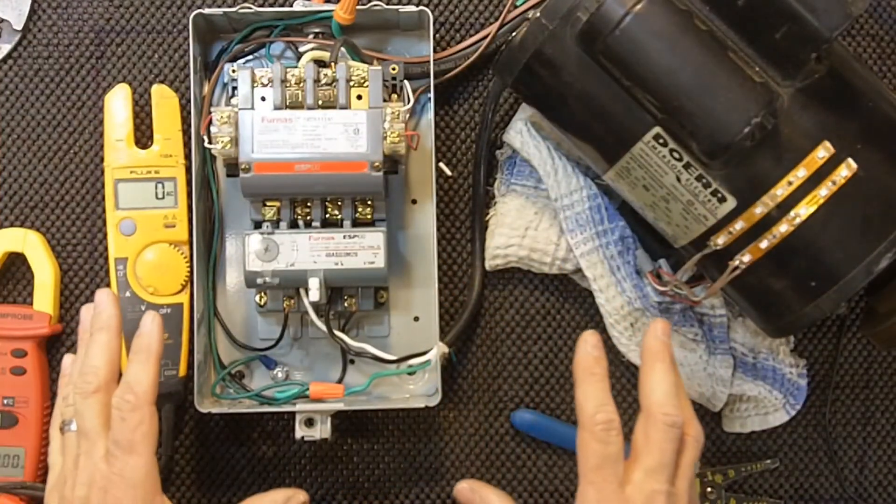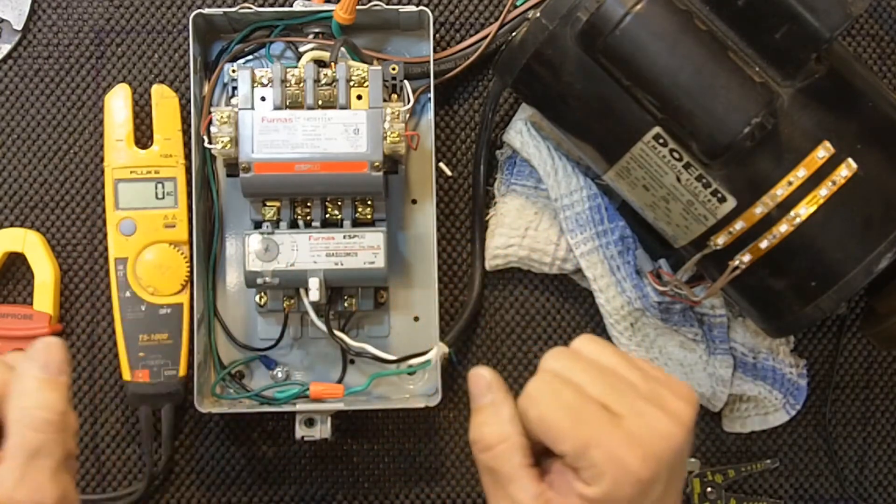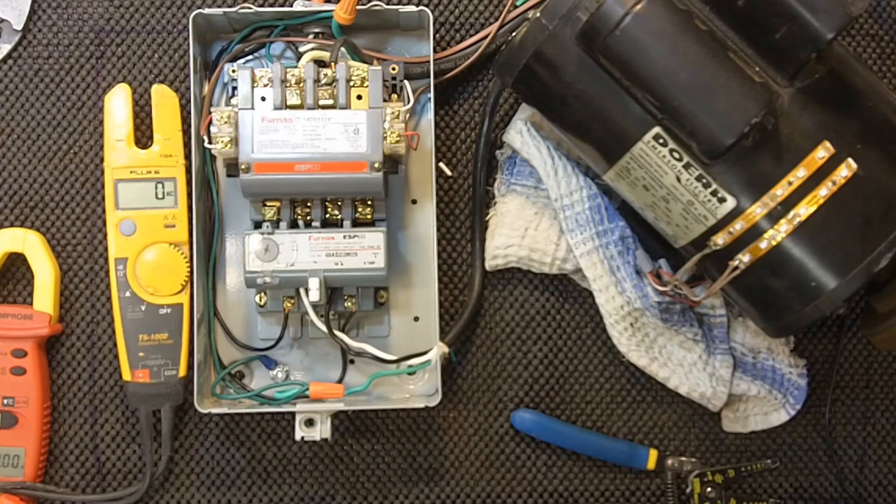It's really pretty simple once you get to know the normally open, normally closed, the line power, load, the relays, the overloads, and what I'll start to do next is start doing a little bit about the symbols.